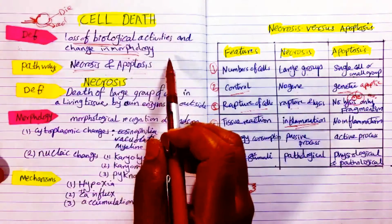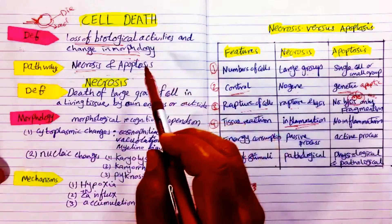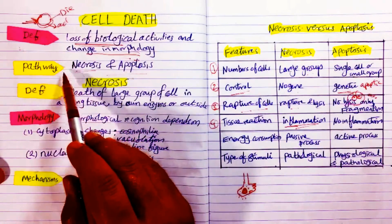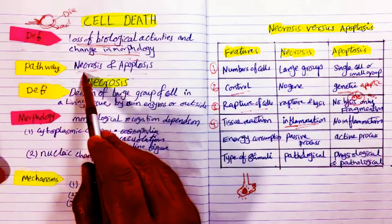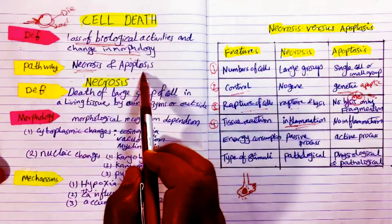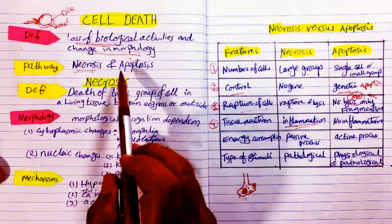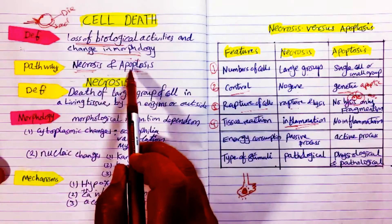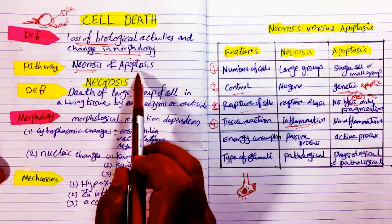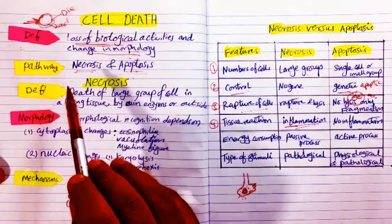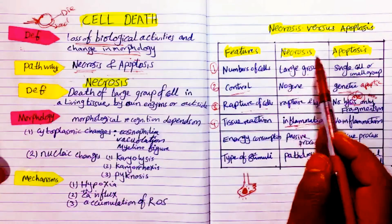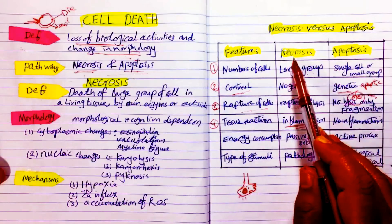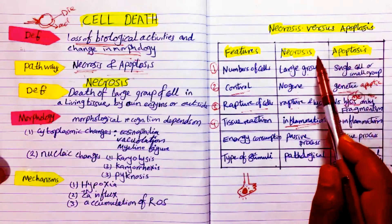When cell death takes place, it will occur by two pathways. Number one is called necrosis, the other one is called apoptosis. We have two pathways for cells to die: necrosis and apoptosis. Both of these pathways have a lot of different features.